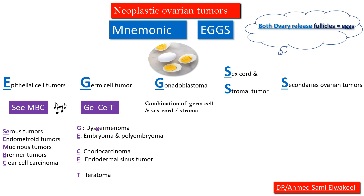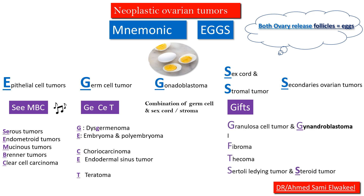Gonadoblastoma is a combination of germ cell and sex cord stromal tumors. The mnemonic for sex cord stromal tumors is GIFTS: G for granulosa cell tumor and gynandroblastoma, I for fibroma, F for thecoma, S for Sertoli-Leydig tumors, and S for steroid tumors.